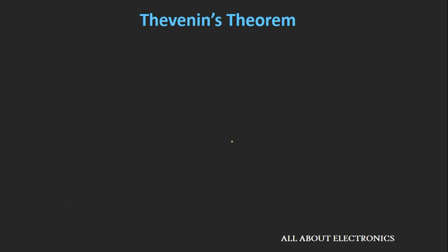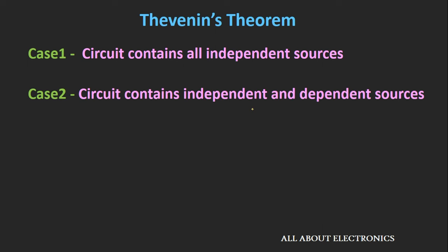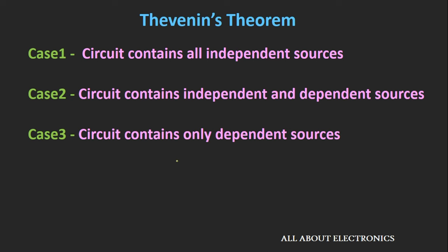There are three different cases for Thevenin's theorem. The first case is that the circuit contains all independent sources. The second case is that the circuit contains both independent and dependent sources. The third case is that the circuit contains only dependent sources. We will see all three cases with one example each.